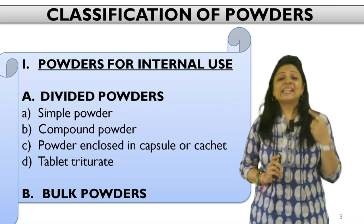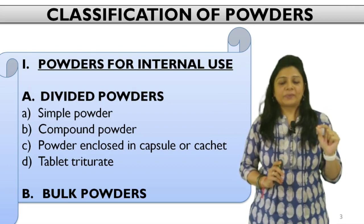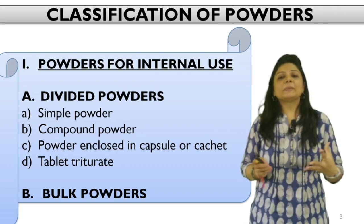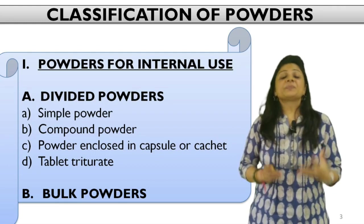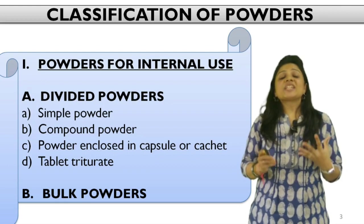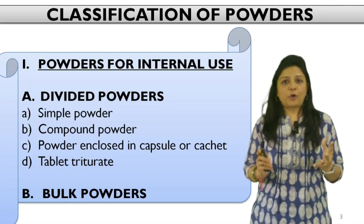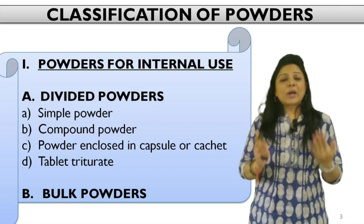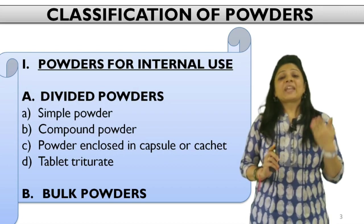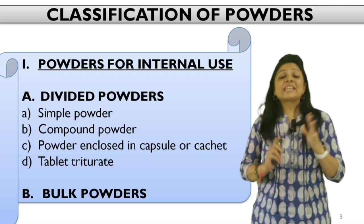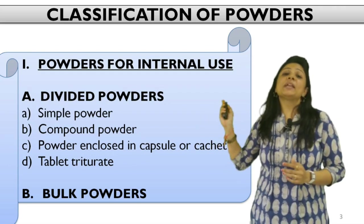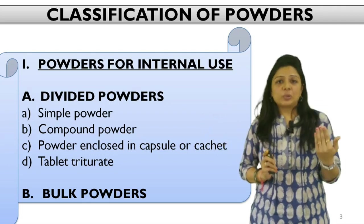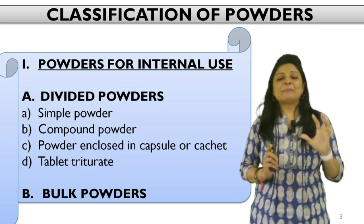Divided powders are directly supplied in a unit dosage form, meaning one dose is taken each time during administration. Bulk powders are supplied in a container in bulk form and you have to measure the dose yourself. Divided powders can be of four different types: simple powder or compound powder based upon composition; powders enclosed in capsule or gelatin; or tablet triturates which are molded into small tablets using a specific mold.